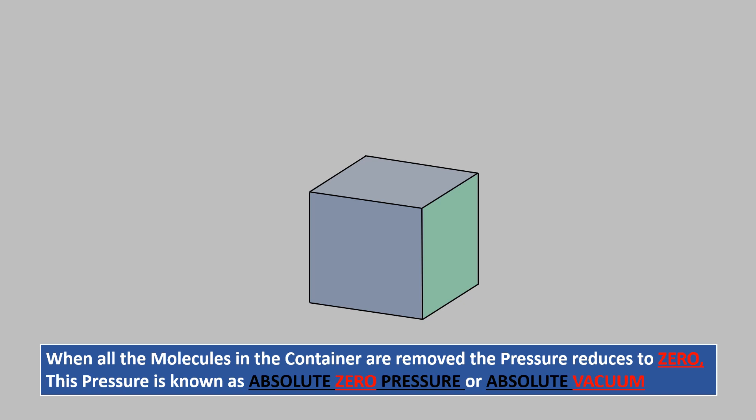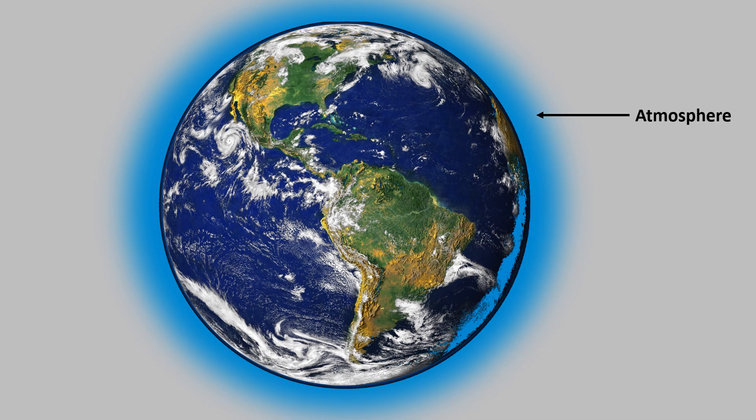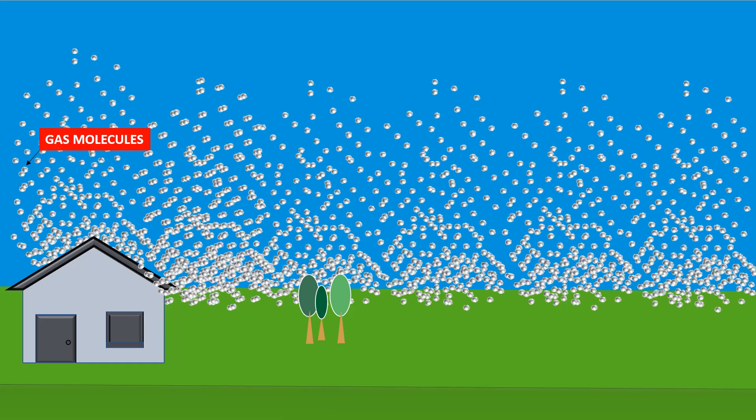However, practically a vacuum pump cannot remove all the gas molecules in a container. Earth is surrounded by a layer of air called atmosphere. And this atmosphere contains different types of gases. These gases exert a pressure on everything it touches on the earth. This pressure is known as atmospheric pressure.